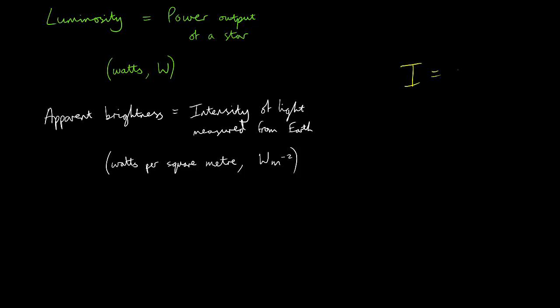That is, intensity equals power divided by surface area. We can replace I and P with apparent brightness B and luminosity L respectively to give us B brightness equals L luminosity divided by A surface area. But what is this area?